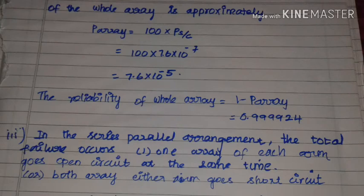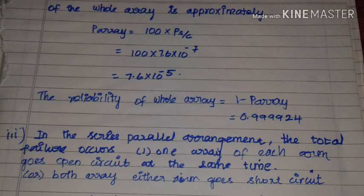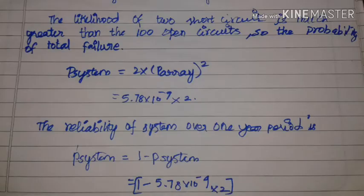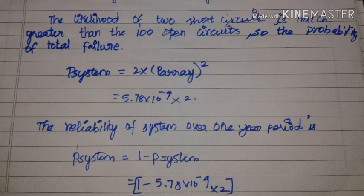The probability of short circuit for 100 cells is 100 into 7.6 into 10 to the power minus 7, which equals 7.6 into 10 to the power minus 5. The reliability of the array is 0.999924. The likelihood of 2 short circuits is much greater than 100 open circuits. So the probability of total system failure p system equals 2 into p array squared. The reliability of the system equals 1 minus p system.